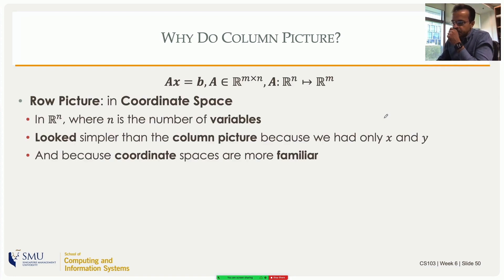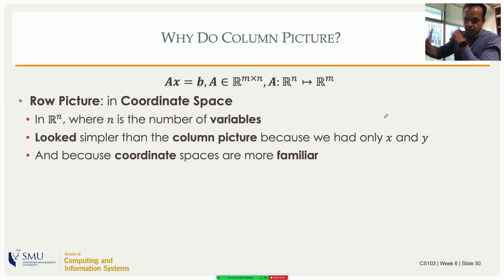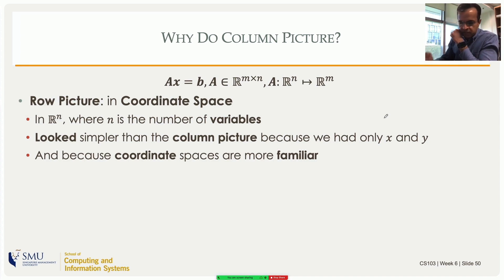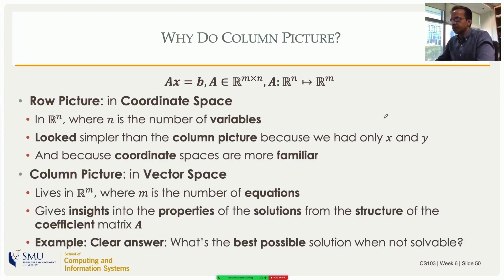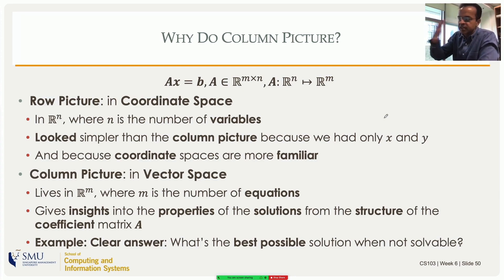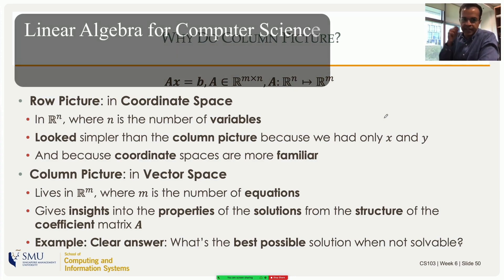To summarize: the row picture lives in coordinate space with as many dimensions as there are variables — dimension n. It looks simpler for small n, but with 50 or 100 variables both pictures are impossible to visualize. The column picture works in the space of dimension equal to the number of equations — dimension m. For linear algebra, the column picture is the better and more fundamental one.